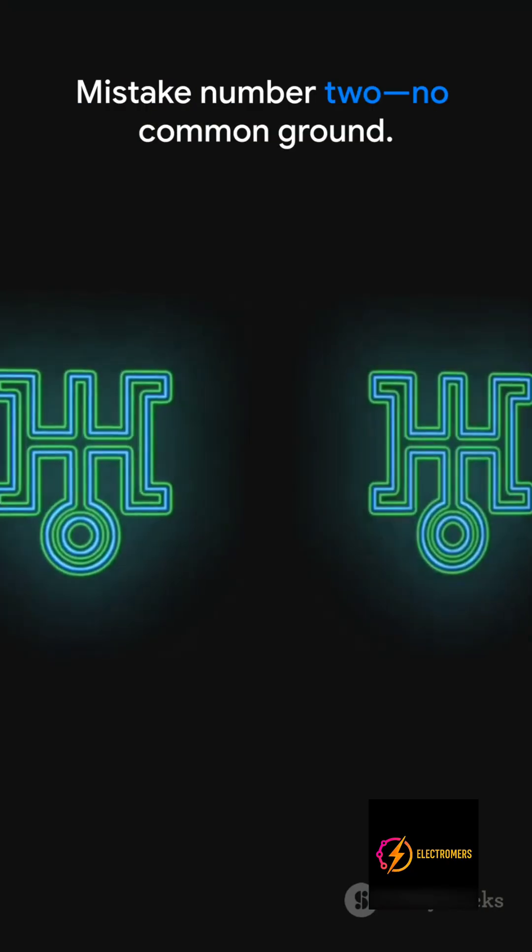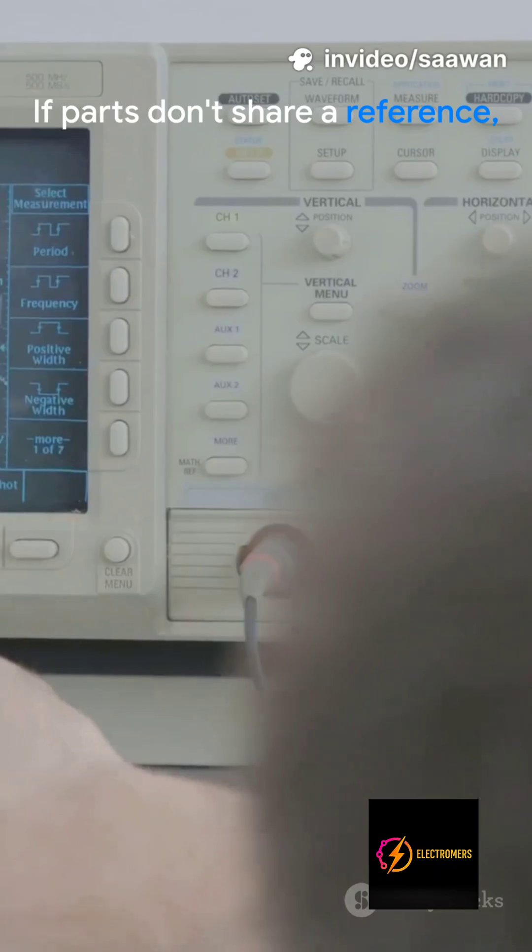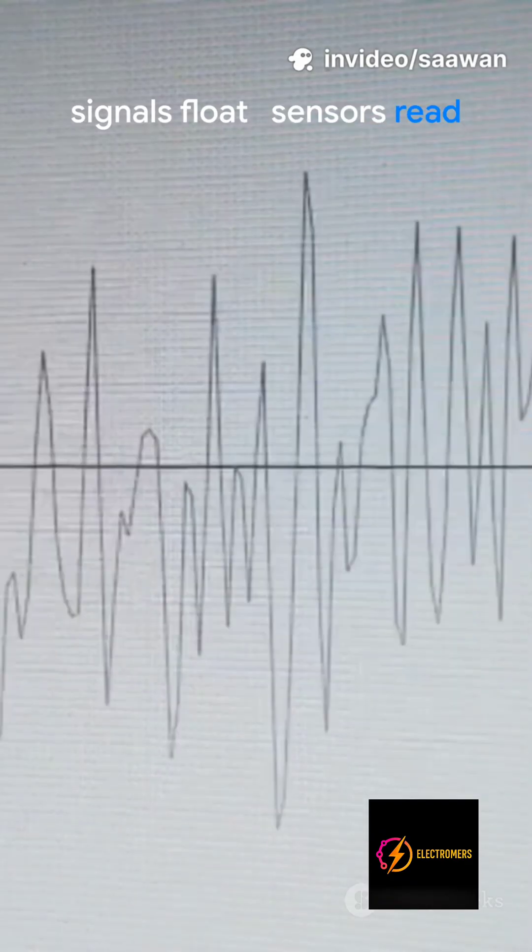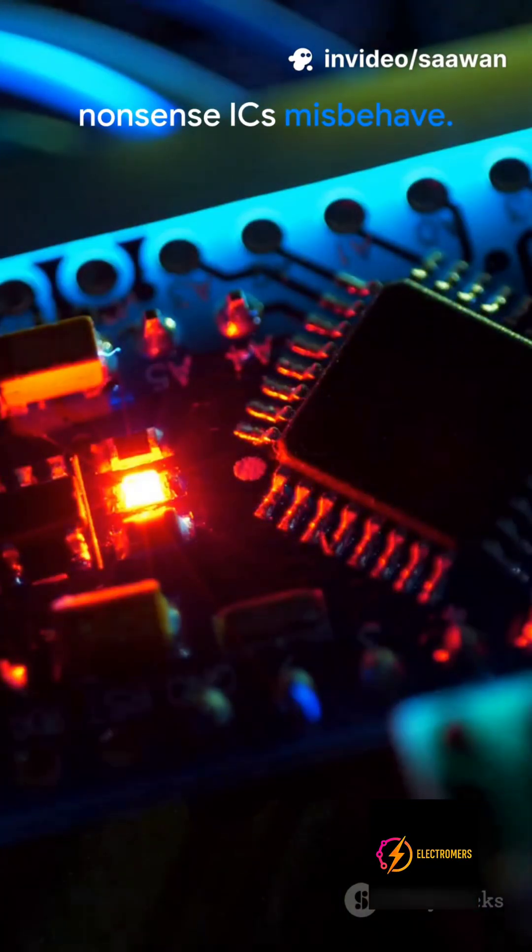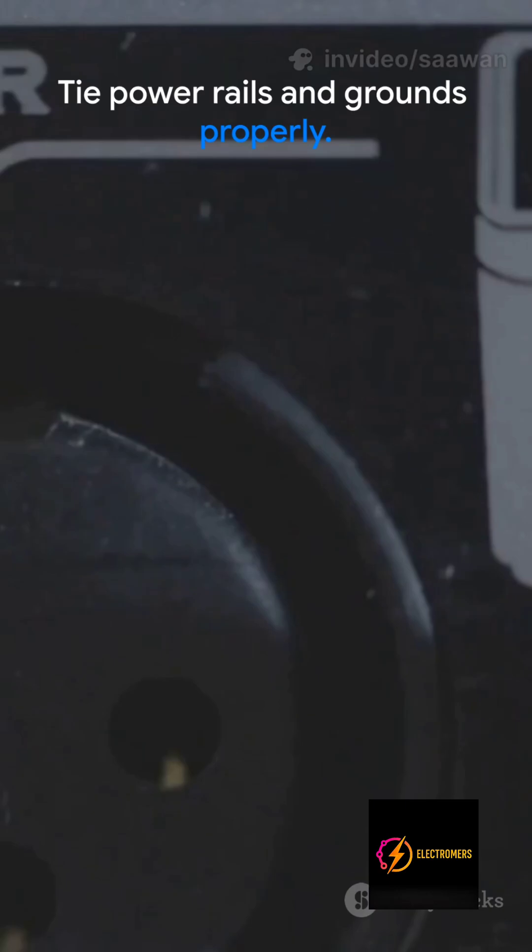Mistake number two: no common ground. If parts don't share a reference, signals float. Sensors read nonsense, ICs misbehave. Tie power rails and grounds properly.